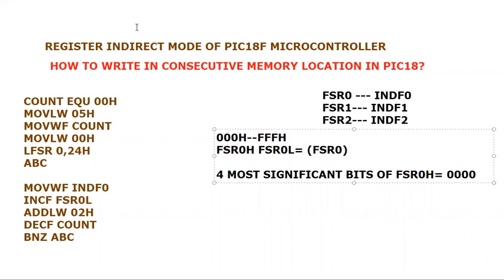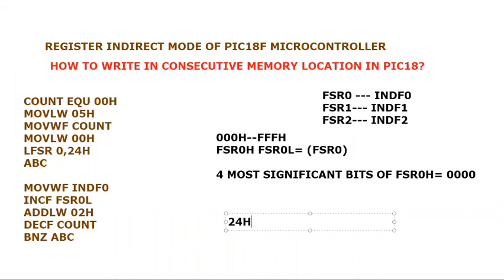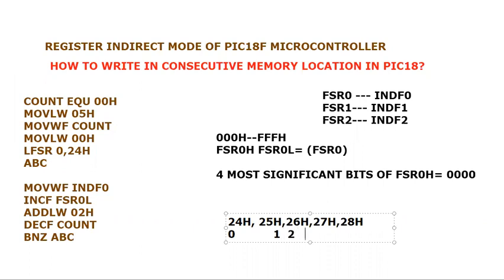Let me give you the scenario for which I have already written the code. There are five locations with addresses 0x24, 0x25, 0x26, 0x27, and 0x28. We will be storing five consecutive even numbers in these locations: 0, 2, 4, 6, and 8. This code has been written to demonstrate how to store these values in consecutive memory locations using register indirect mode.